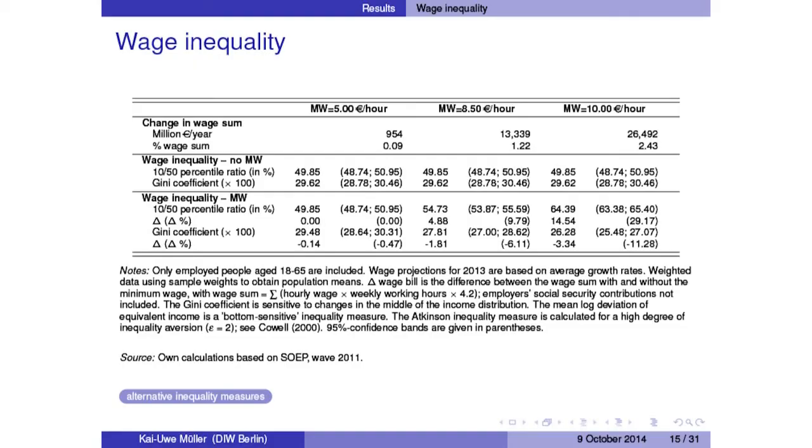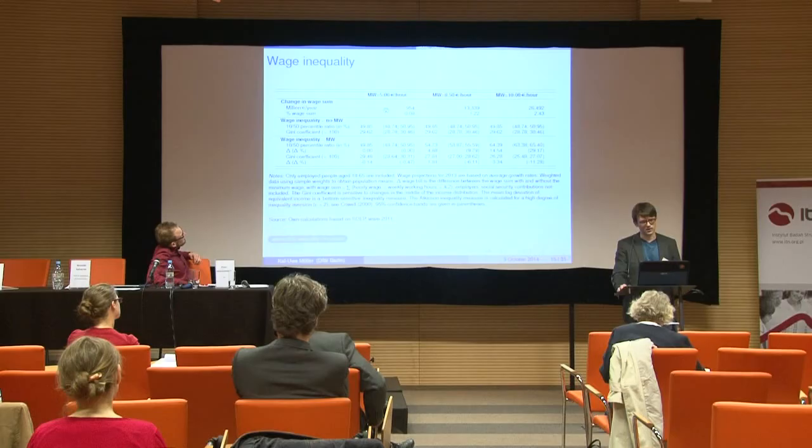Let's go to the results. Three different columns for the three different wage levels — minimum wages of €5, €8.50, and €10. First, the aggregate effect on the wage sum: a rather low minimum wage of €5 per hour would increase wages in Germany in 2013 by about €1 billion per year, or about 0.1% of the total wage sum. So a low minimum wage would have a marginal aggregate effect on wages.